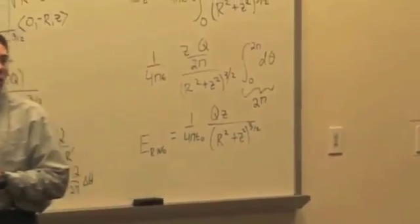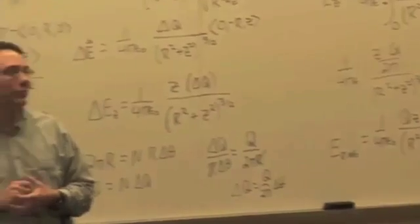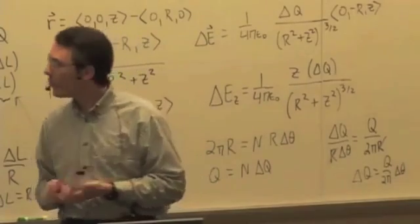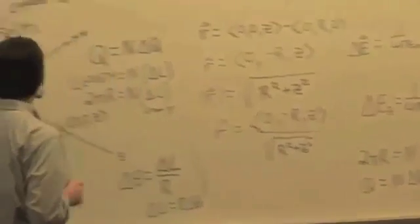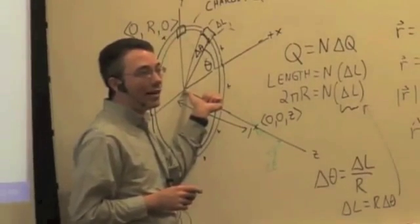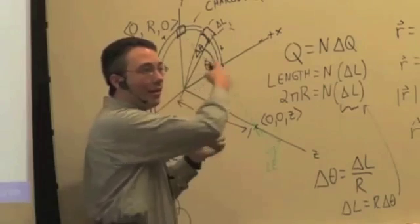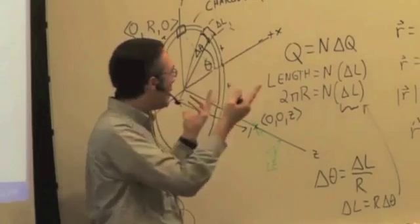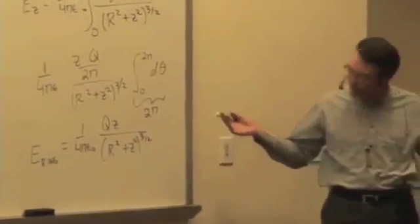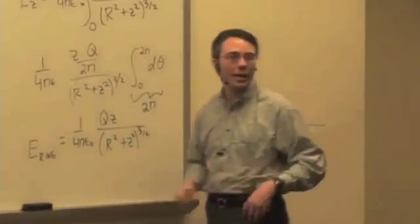How can we check it? Where do you know a result? What's the electric field have to be at the center? All the fields would cancel out. They'd all be pointing in opposite directions. If I plug in z equals 0 into this expression, what do I get? I get 0. So it seems to work.